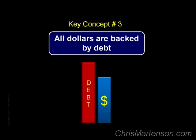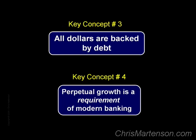I'm not going to cast judgment on this and say that it's good or bad — it simply is what it is. By understanding its design, you will be better equipped to understand that the potential range of future outcomes for our economy are not limitless, but rather bounded by the rules of the system. All of which leads us to the fourth key concept: perpetual expansion is a requirement of modern banking. Each year, new credit or loans must be made that at least equal the amount of all the outstanding interest payments that year.